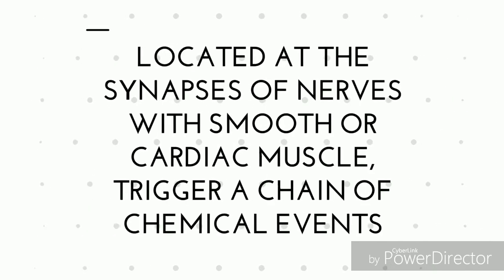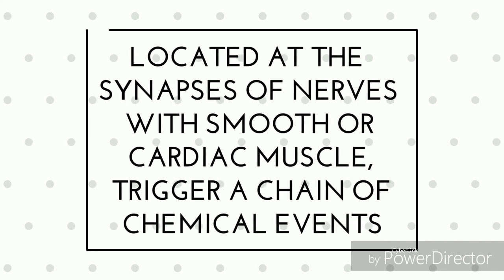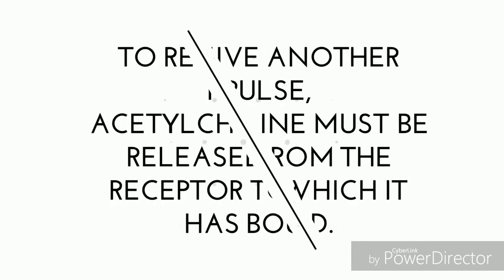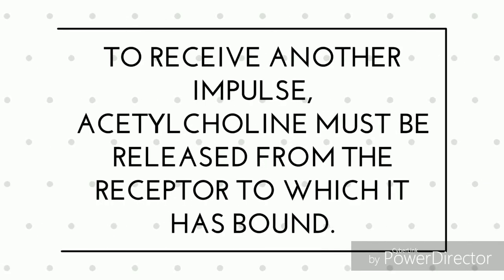Muscarinic receptors, located at the synapses of nerves with smooth or cardiac muscle, trigger a chain of chemical events referred to as signal transduction.